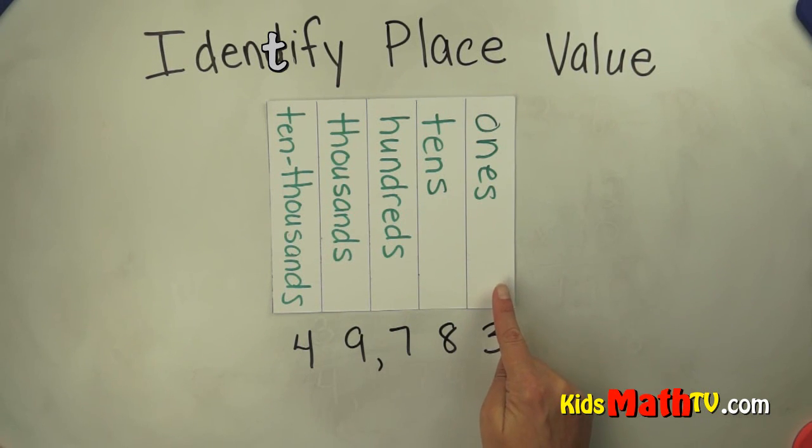Starts off here at the ones place, then tens, hundreds, thousands, ten thousands.